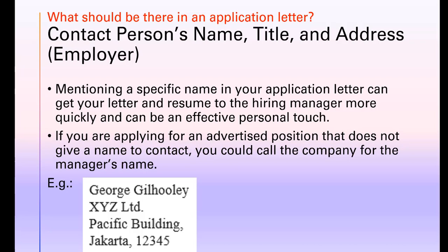Now let's go back to the application letter. The first component is the contact person's name, title, and address of the employer. Mentioning a specific name in your application letter can get your letter and resume to the hiring manager more quickly and can be an effective personal touch. If you are applying for an advertised position that does not give a name to contact, you could call the company for the manager's name. For example: George Gilholy, XYZ Limited, Pacific Building, Jakarta 12345.